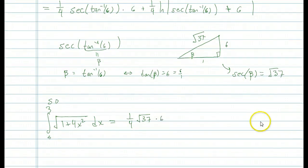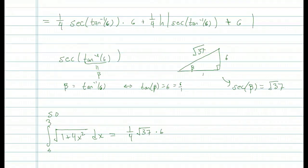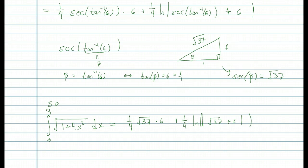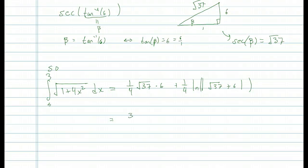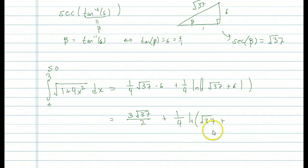After all of that, we get one-quarter times the square root of 37 times 6, plus one-quarter times the natural log of the square root of 37 plus 6. Definitely a non-trivial answer for that arc length. It seems like a very easy problem, but to the contrary it's quite difficult to come up with that exact arc length. Simplifying, we can cancel a factor of 2, but we can't do much more with the natural log — we just have to leave it as is.